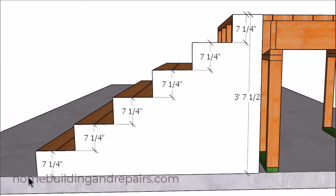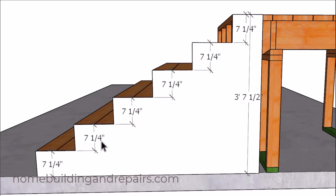First level, second level. And you can see here where we have one, two, three, four, five, six risers at seven and a quarter. And if we divide six into three foot seven and a half we should get seven and a quarter inches.